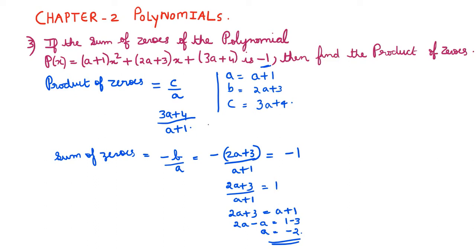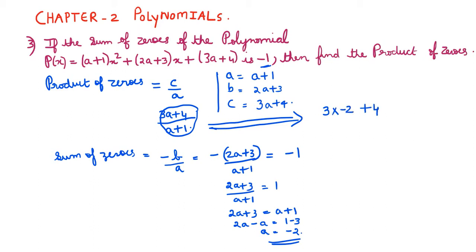Now substituting a equals minus 2 into the product of zeros expression (3a plus 4) divided by (a plus 1): this gives 3(minus 2) plus 4 divided by (minus 2 plus 1), which is (minus 6 plus 4) divided by (minus 1), equalling minus 2 divided by minus 1. The product of zeros is plus 2.